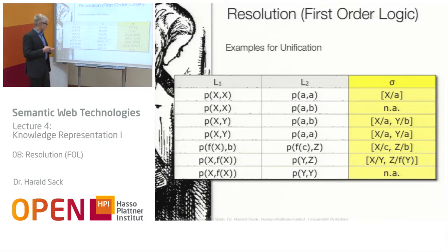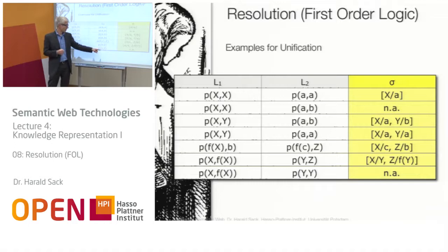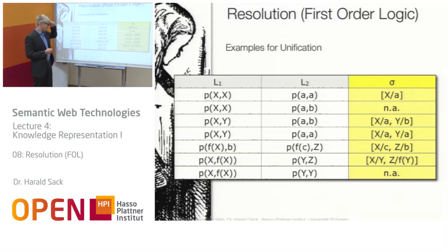The last example is not unifiable: l₁ = p(x, f(x)) and l₂ = p(y, y). You can substitute x with y, but then f(x) becomes f(y), which must equal y — this creates a circularity and unification is not possible.